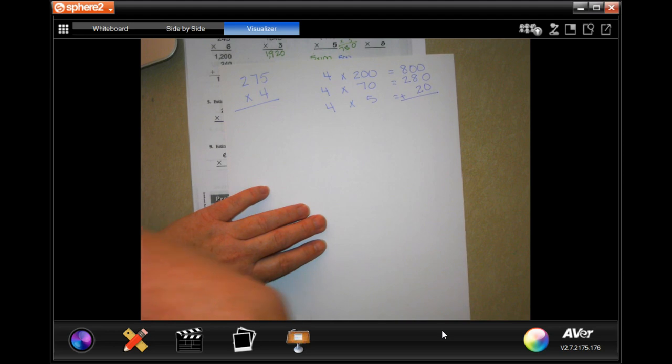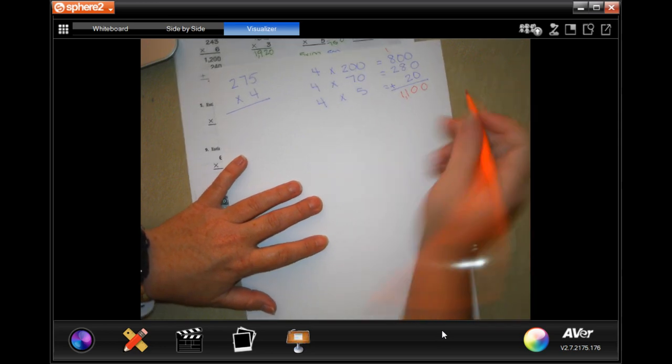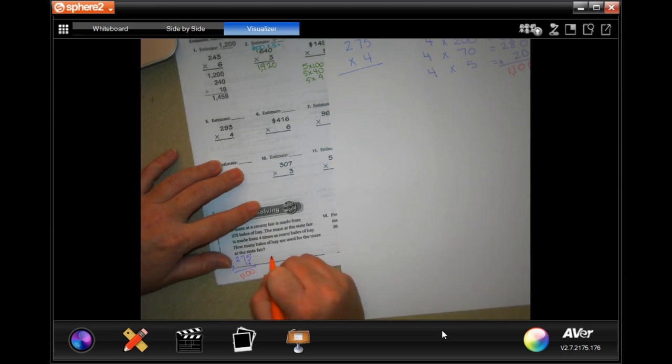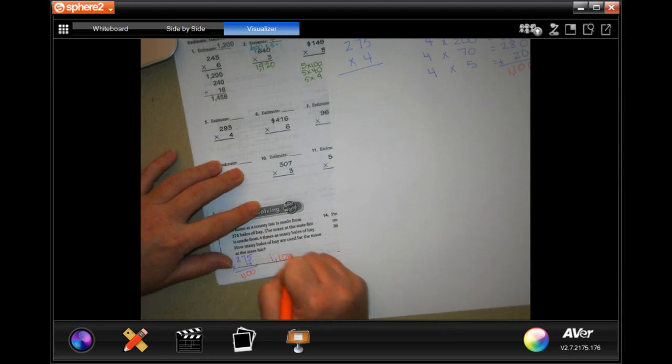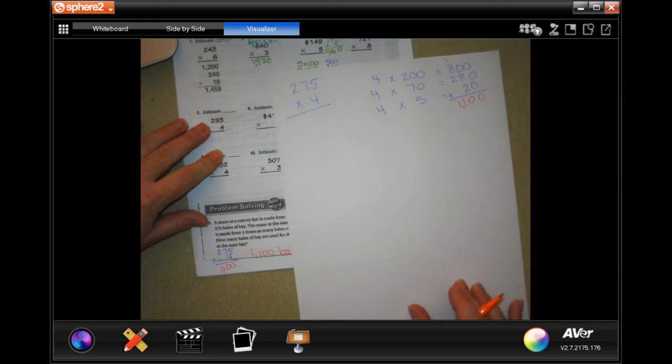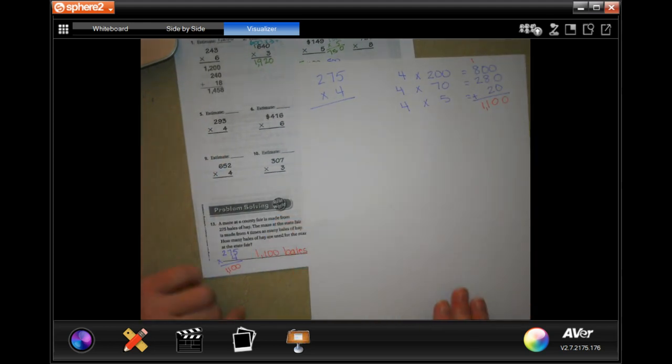So now when we add them up, turn our 1 and 11. So 1,100 bales. All right guys. You can pause, write down your work, do whatever you need to do. That was just a tiny space for me to write down all that work.